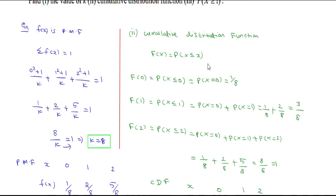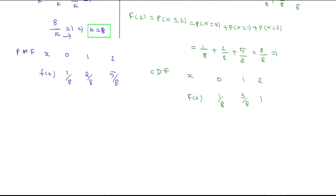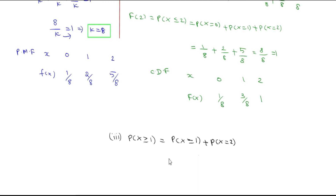Part 3: P(X ≥ 1). Probability of x greater than or equal to 1 equals P(X = 1) + P(X = 2) = 2/8 + 5/8 = 7/8. Therefore the answer is 7/8.